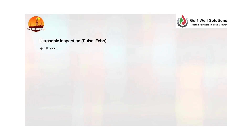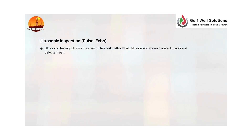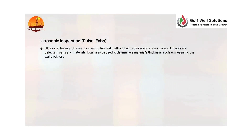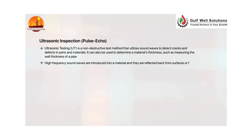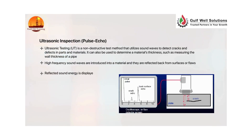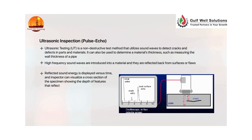Ultrasonic inspection, or pulse echo: Ultrasonic testing, or UT, is a non-destructive test method that utilizes sound waves to detect cracks and defects in parts and materials. It can also be used to determine a material's thickness, such as measuring the wall thickness of a pipe. High-frequency sound waves are introduced into a material and reflected back from surfaces or flaws. Reflected sound energy is displayed versus time, allowing an inspector to visualize a cross-section of the specimen showing the depth of features that reflect sound.